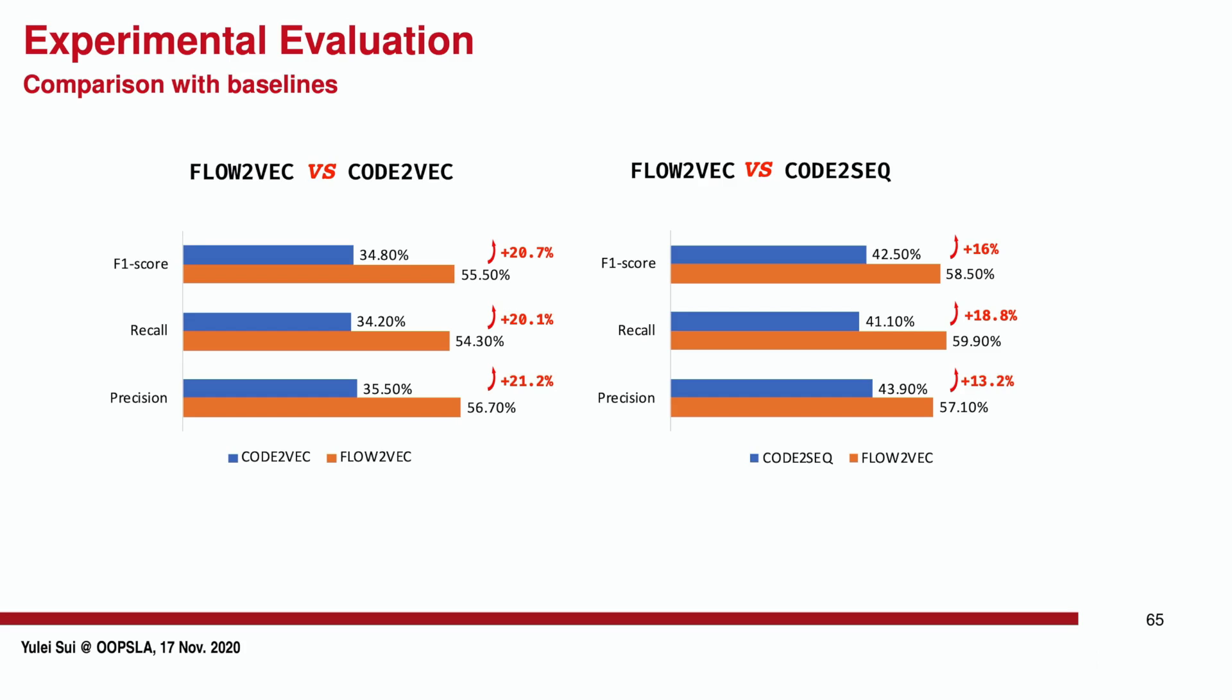This figure shows the comparison results between flow-to-vec and existing approaches. Flow-to-vec outperforms code-to-vec in terms of F1 score, recall, and precision, with an average improvement of around 20% for the code classification task. When comparing with code-to-sequence for code summarization task, flow-to-vec improves 16% for F1, 18% for recall, and 13% for precision.